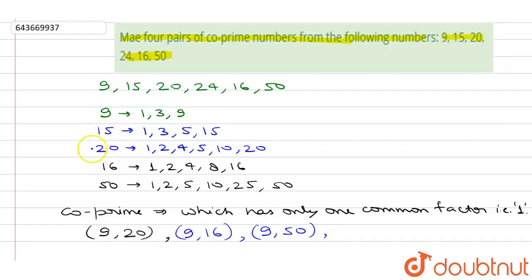Now let's look at any other one. If we look at 15 and 16, they have only one common factor which is 1. Therefore, the next pair of co-prime numbers is 15 and 16.